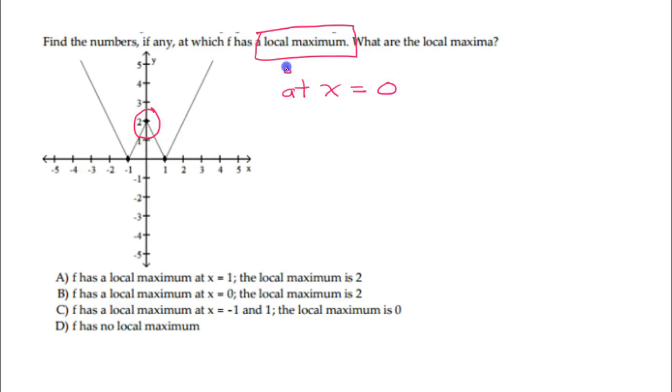Now the maximum value - the local maximum value is 2. So we have a local maximum of 2 at x equals 0.